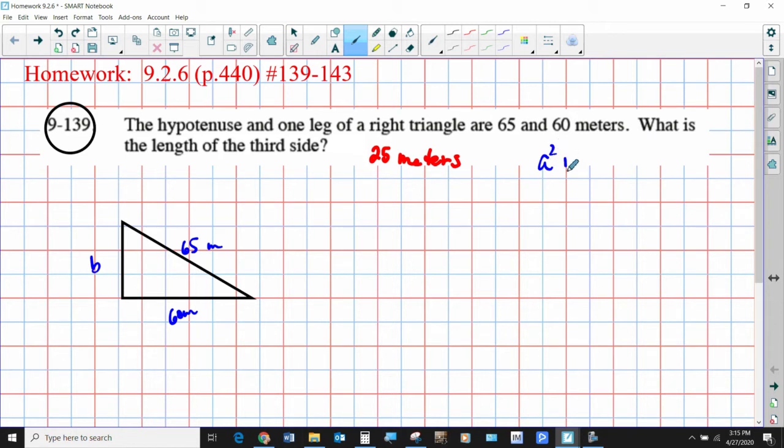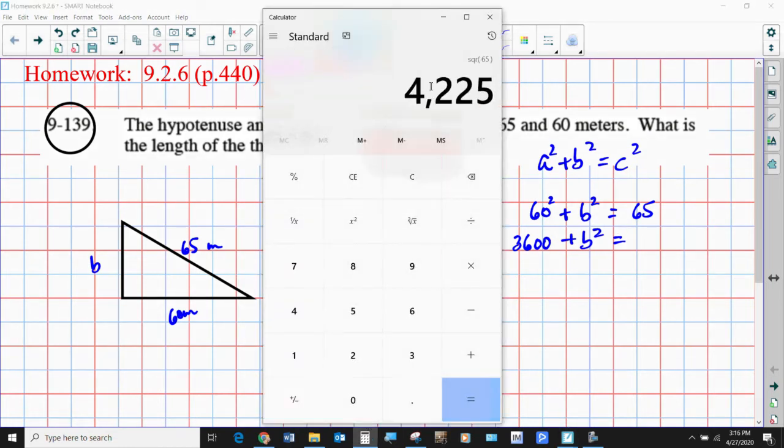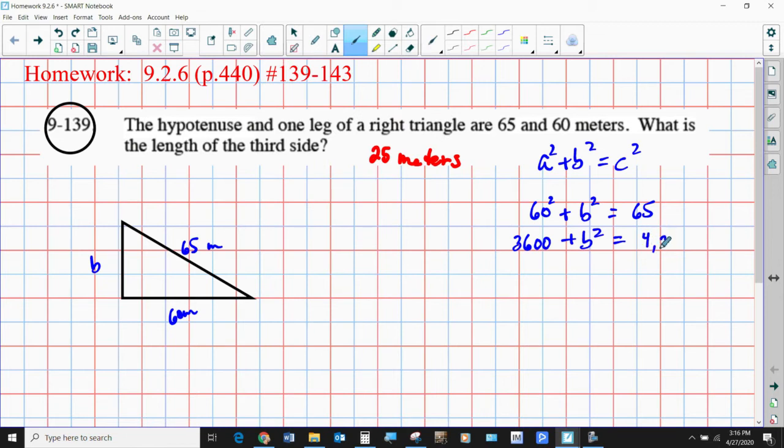So if we just take our A squared plus B squared equals C squared, you know you've got a hypotenuse and a leg. Let's say 60 squared, that's one of the legs, plus B squared, which is the other leg which we don't know, is equal to the hypotenuse squared, which we know has to be 65. So we're going to square that. I know this is 3,600 plus B squared. I don't know what 65 squared is, so I'm going to go ahead and use my calculator. 4,225.